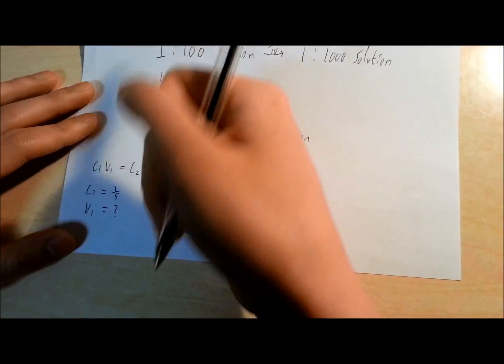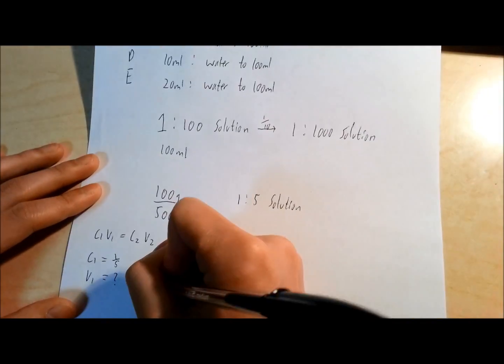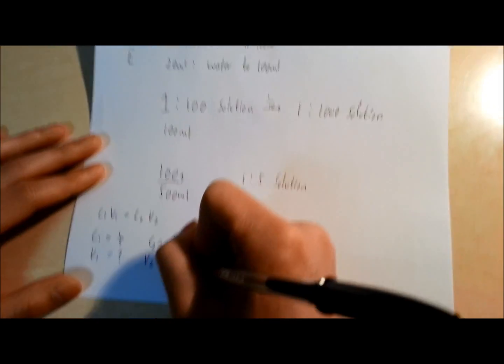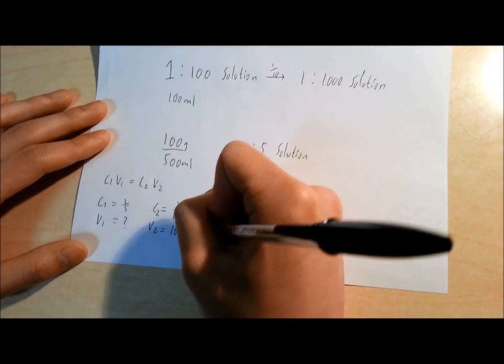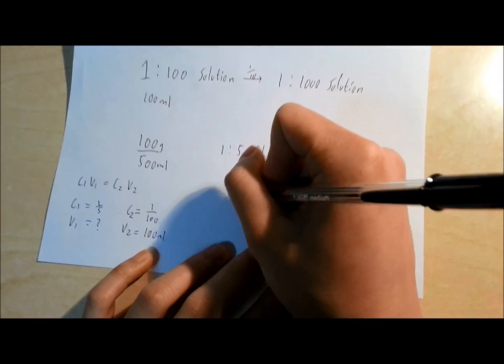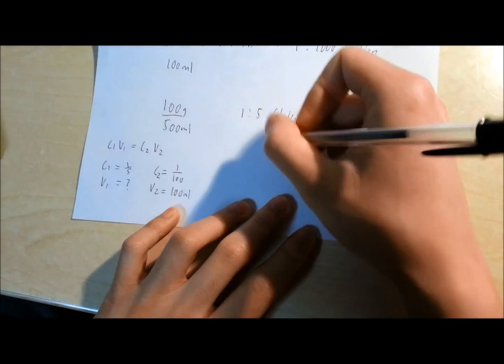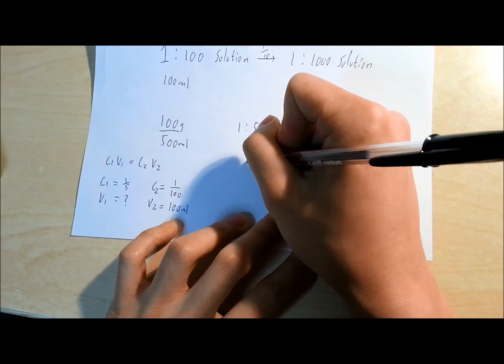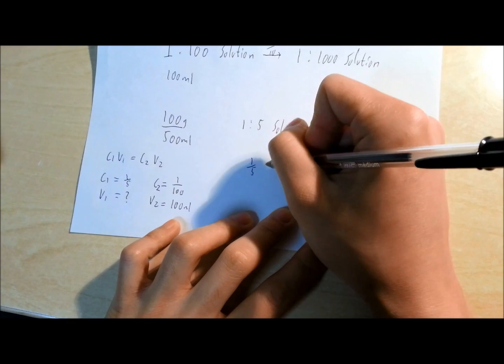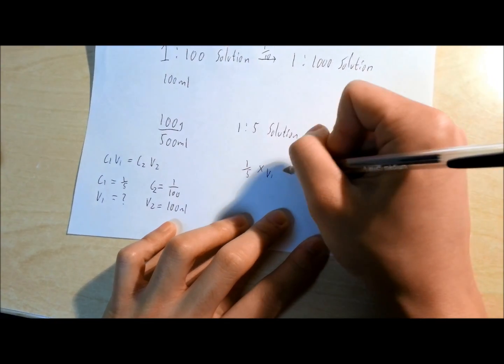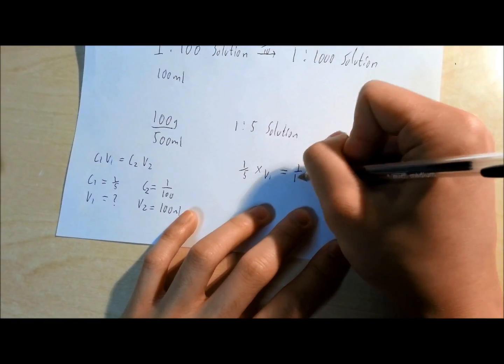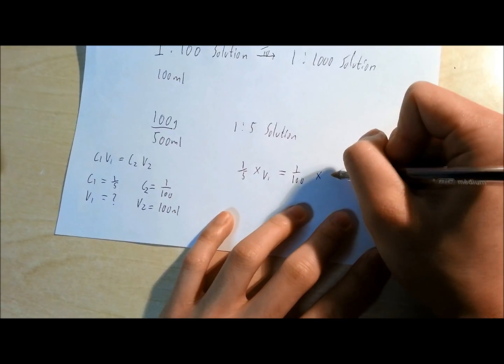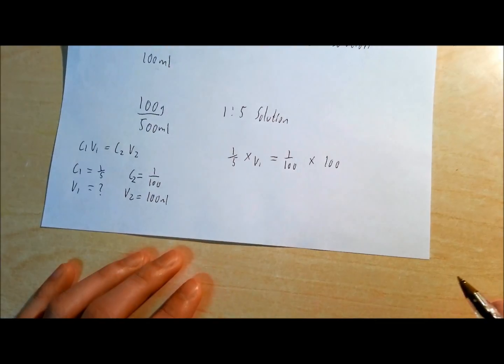And as the volume stated says, it has to be 100 milliliters. So now we form our equation, we substitute that into this equation. So C1, which is 1 over 5, times V1 equals to 1 over 100, which is our C2, times 100, which is our V2.